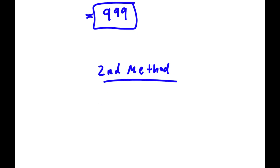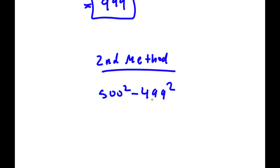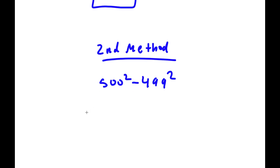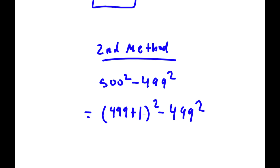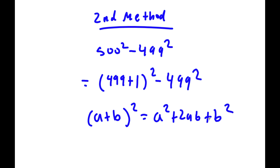Another way to do this problem: I have 500 squared minus 499 squared, and this time I'm going to rewrite 500 squared as (499 plus 1) squared. So now I have (499 plus 1) squared minus 499 squared. If I have something in the form (a plus b) squared, this equals a squared plus 2ab plus b squared.